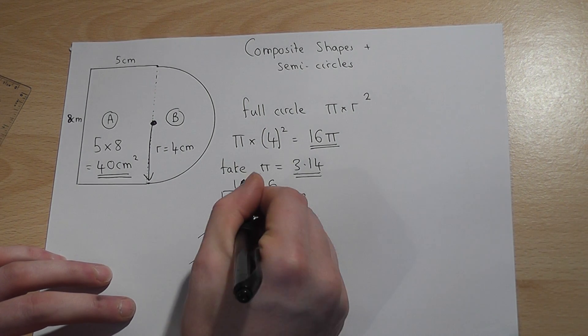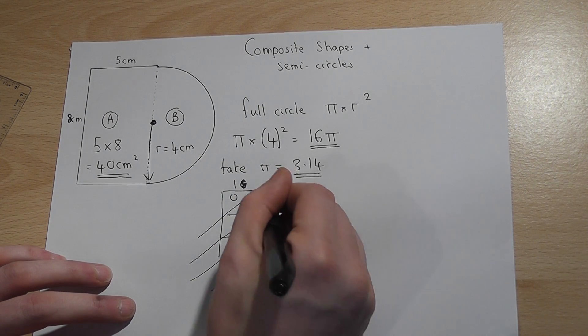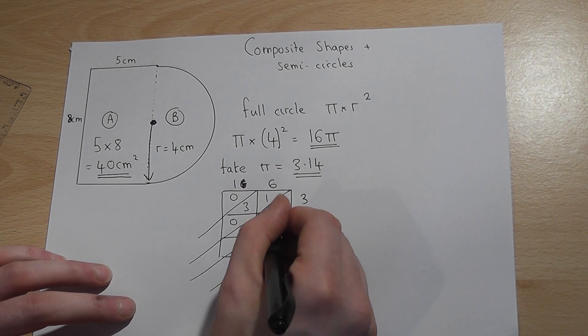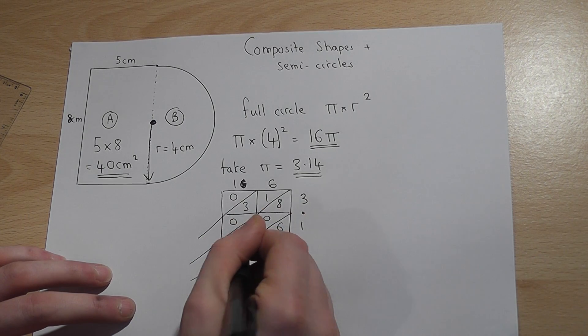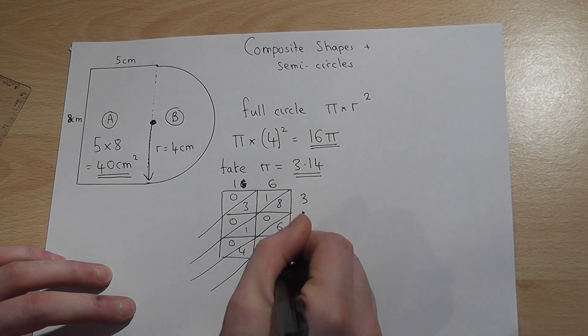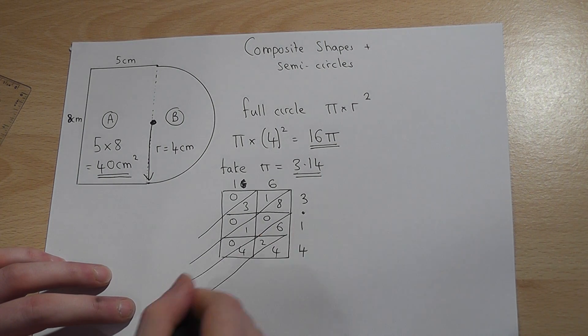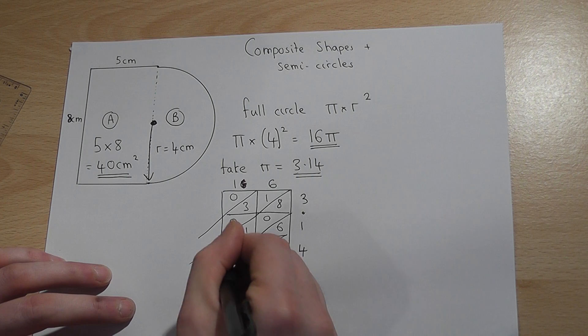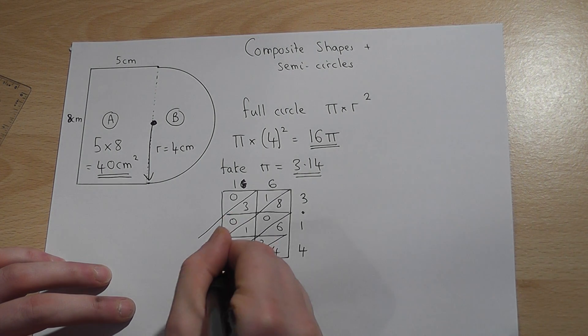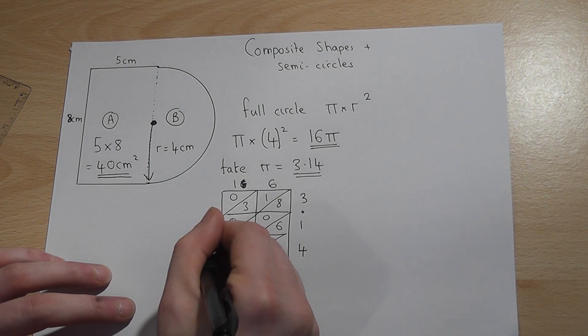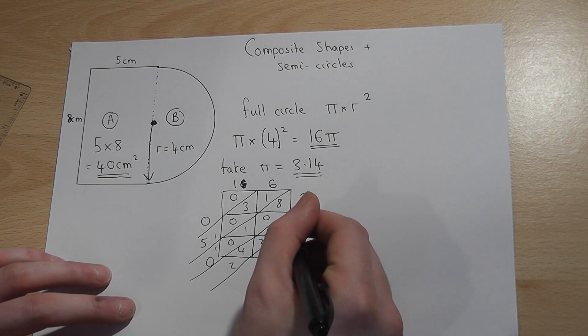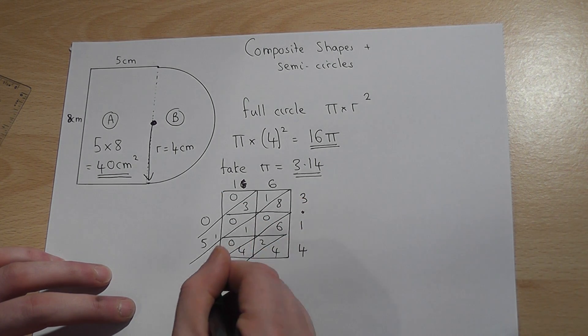1 times 3 is 3, 6 times 3 is 18, 1 times 1 is 1, 6 times 1 is 6, 1 times 4 is 4, 6 times 4 is 24. Add up the diagonals starting from here: 4, 12 carry the 1, 10 carry the 1, 5 and 0 and the point just falls down its diagonal like so.